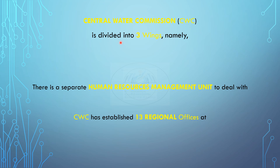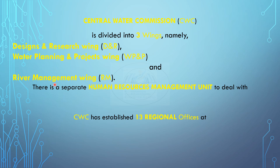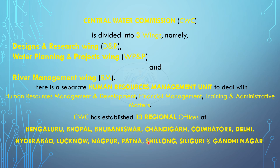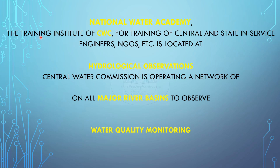The Central Water Commission, CWC, is divided into three wings: the Designs and Research Wing (D&R), the Water Planning and Projects Wing (WP&P), and the River Management Wing (RM). There is a separate Human Resources Management Unit for HR management and development, financial management, training, and administrative matters. CWC has established 13 regional offices at Bengaluru, Bhopal, Bhubaneswar, Chandigarh, Coimbatore, Delhi, Hyderabad, Lucknow, Nagpur, Patna, Shillong, Siliguri, and Gandhinagar. The National Water Academy, the training institute of CWC for training of central and state in-service engineers, NGOs, etc., is located at Pune in Maharashtra.